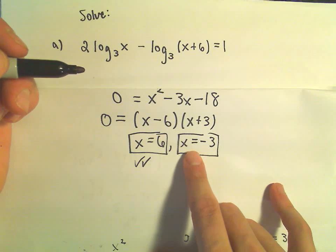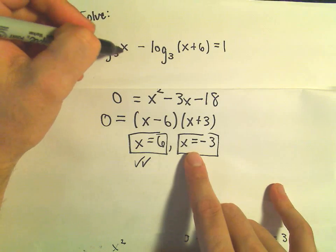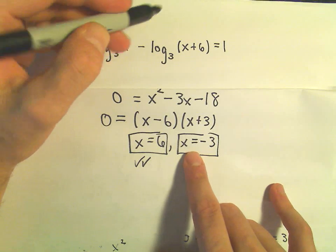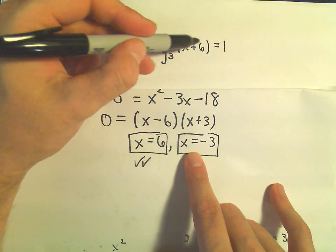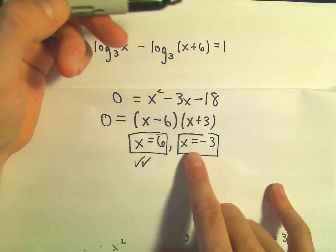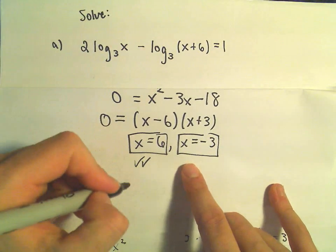But notice if we plug negative 3 in, we're going to have a logarithm of a negative number. On the second term, if we plug in negative 3, we would still have a positive value. But on the first part,